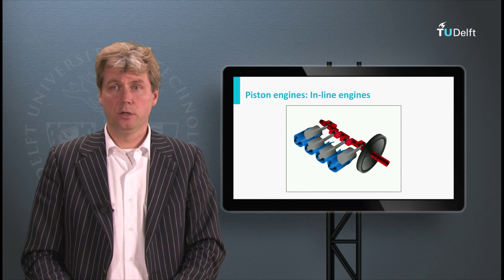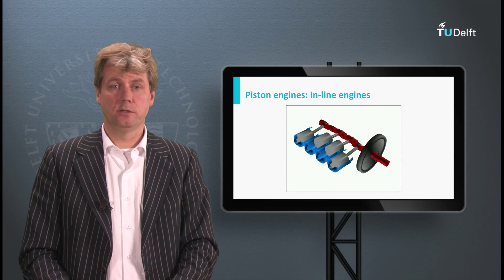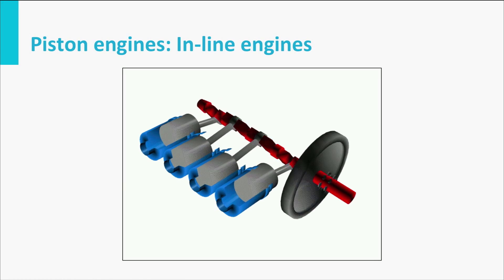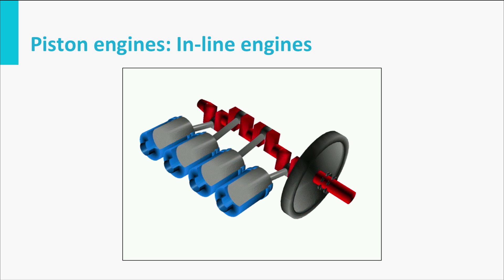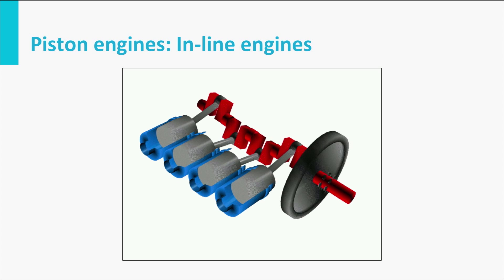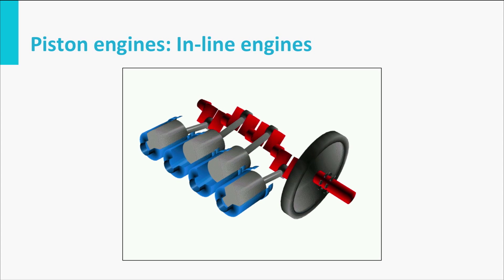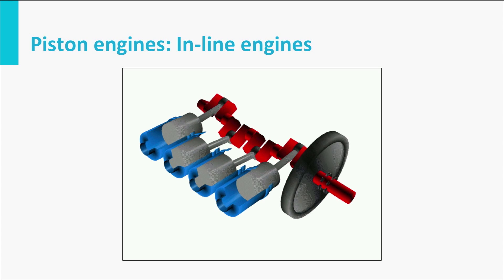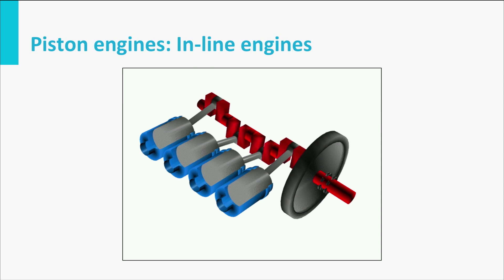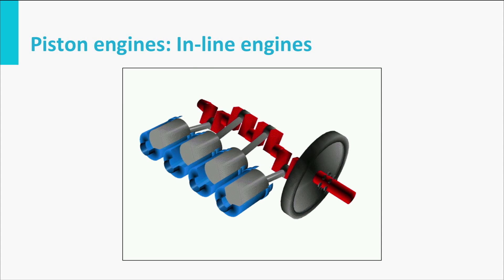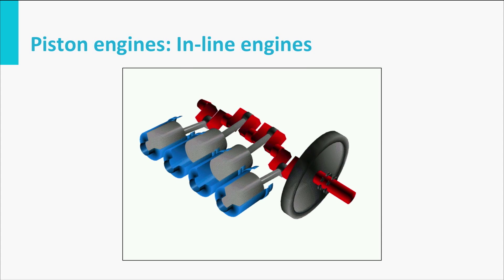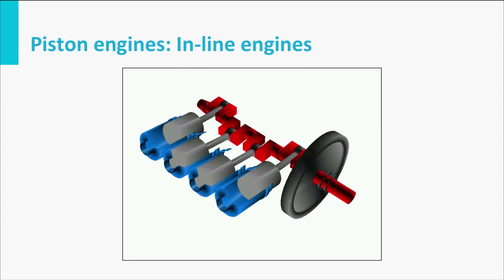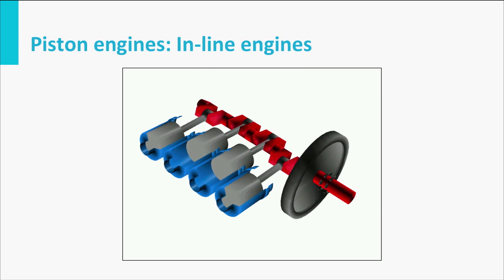For instance here we see the inline engine and this is the type of engine as used by the Wright brothers, for instance. They had simply put the different cylinders in one line and you see that while one of the cylinders, or actually two of the cylinders are expanding, they provide the energy via the axis to the other cylinders to compress and this is how the sum or the subtraction actually of the two different energies takes place in an inline engine.